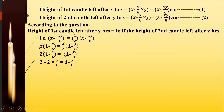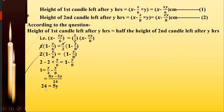Rearranging — taking 1 to the left and y by 3 to the right — gives 2 minus 1 equals y by 3 minus y by 8, so 1 equals y by 3 minus y by 8. Taking 24 as the LCM: 1 equals (8y minus 3y) upon 24, which is 5y upon 24. Therefore 5y equals 24, giving y equals 24 upon 5, which is 4.8 hours.